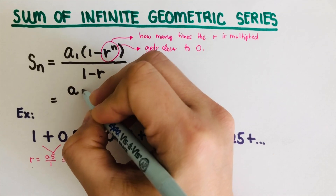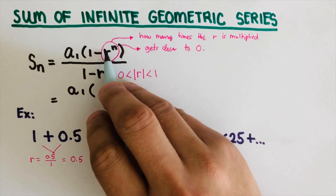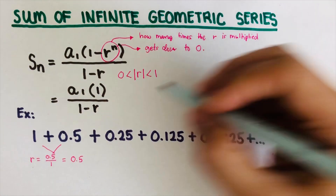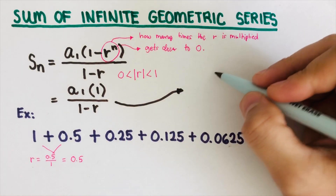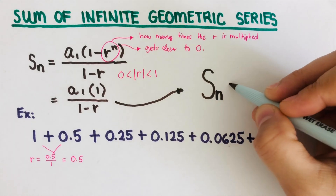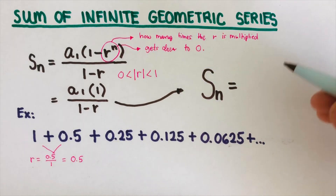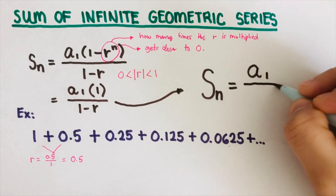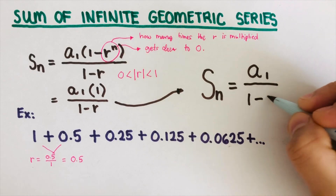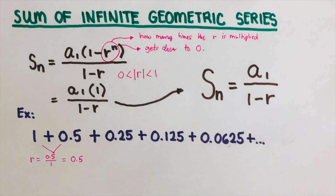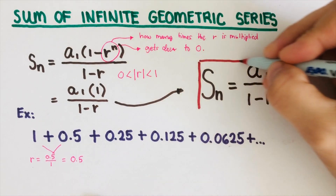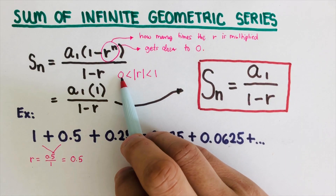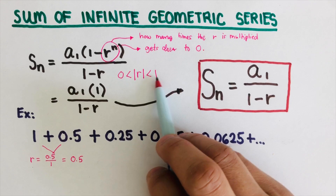So what will our equation be if that part approaches zero? The equation becomes a₁ times (1 minus 0) over (1 minus r), and since one minus zero is just one, this simplifies to a₁ over (1 minus r). This is our formula for the sum of an infinite geometric series, provided that r is greater than zero and less than one.